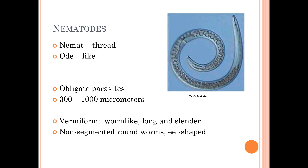They're obligate parasites, which means they have to have something to feed on in order to exist. They're very small — 300 to 1,000 micrometers — and they're vermiform, or worm-like. They're long and slender, non-segmented roundworms. They're eel-shaped.